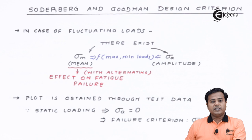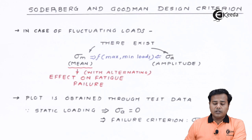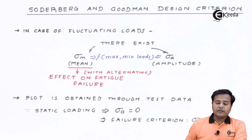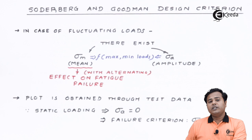If there is an alternating load with the mean stress, the effect on fatigue failure will be observed. These are experimental outcomes on which we need to decide certain aspects. They performed those experiments, came up with the values and outcomes, and then plotted the values.